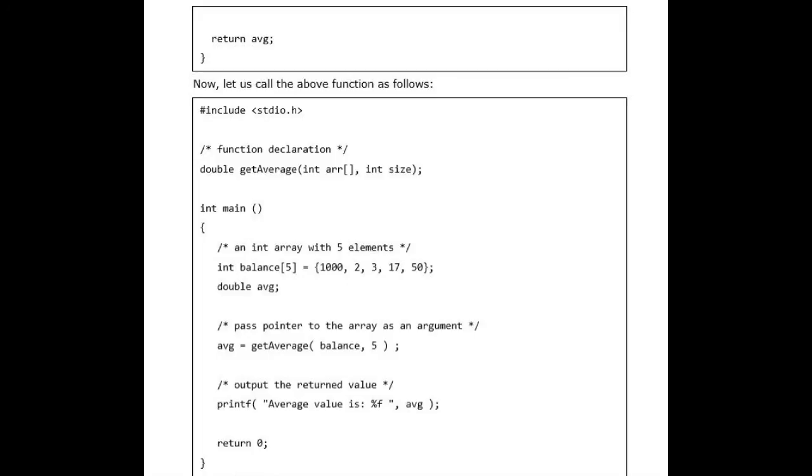Average value is 214.40000. As you can see, the length of the array doesn't matter as far as the function is concerned because C performs no bounds checking for formal parameters.